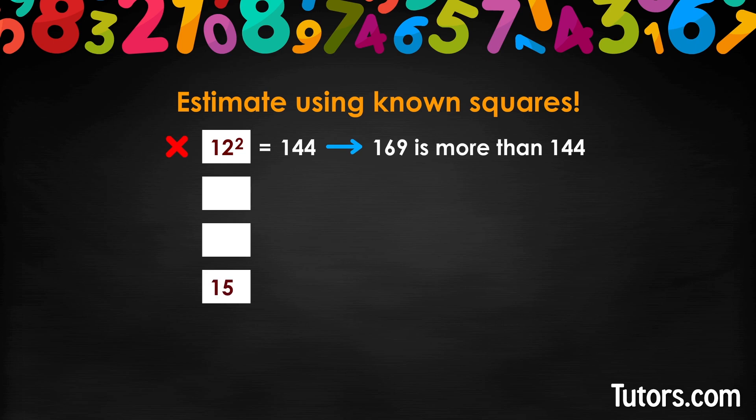Let's try 15. We calculate 15 squared equals 225, which is too big. We have now learned the square root of 169 is somewhere between 12 and 15.